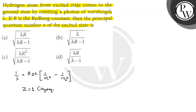Now we know that Z is equal to 1 for hydrogen — the atomic number of hydrogen is 1. We are given that the quantum number of the excited state is n, so n1 will be equal to n. And n2 is the ground state, which means n2 is equal to 1.